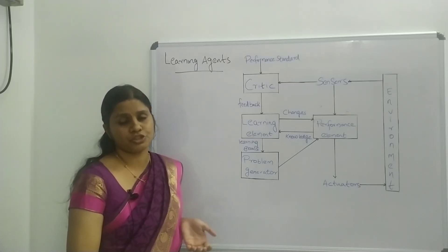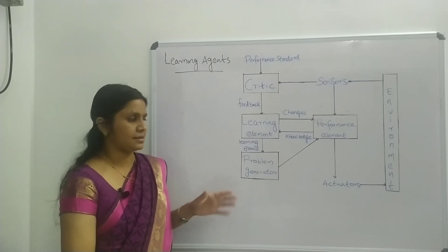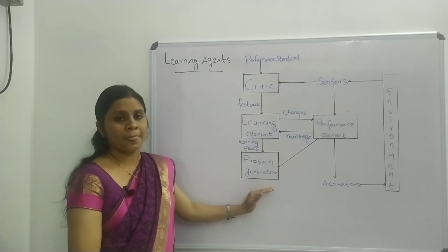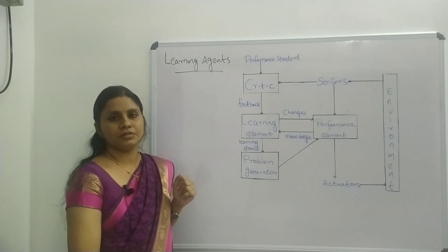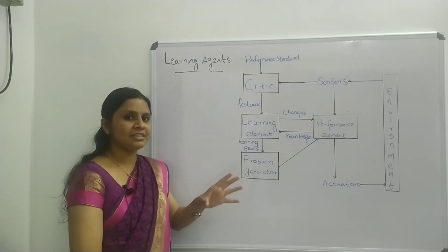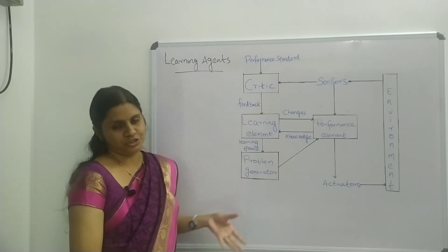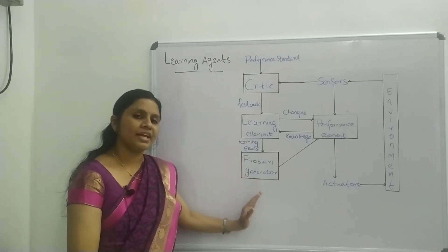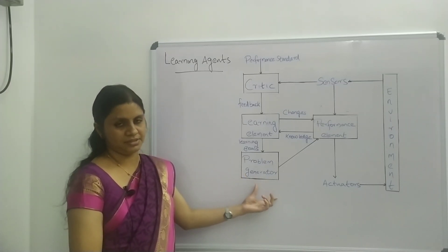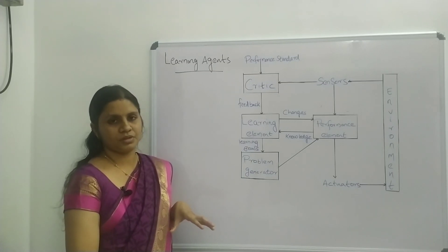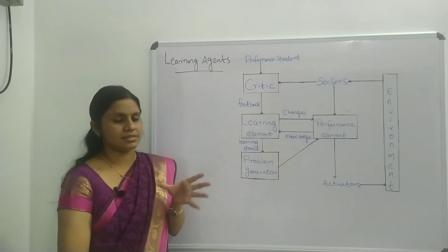The problem generator is one of the main components — it suggests new courses of action and new ideas. It is the main piece that keeps the agent learning. It suggests new situations and new ideas for performing actions, so the agent keeps on learning continuously.